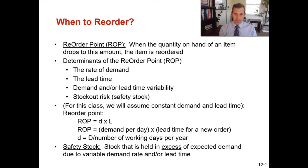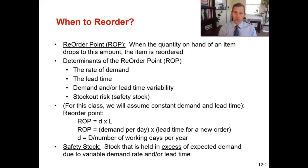For sake of this class, we're just going to look at the reorder point equals your daily demand multiplied by your lead time — that's it. Your daily demand multiplied by your lead time. The calculation uses lowercase d, which is demand per day, multiplied by your lead time for a new order. To get that lowercase d, the daily demand, you may need to take your uppercase D, which is your annual demand, and divide that by the number of working days per year.